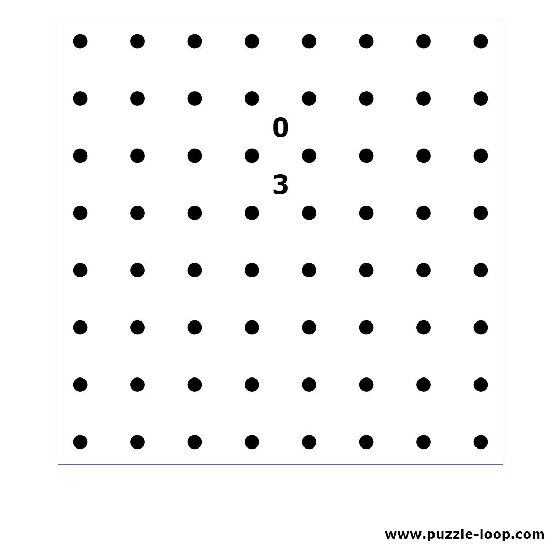The next pattern is a very common one. We mark the sides of the 0 with an X, which leaves only 3 available sides for the 3.